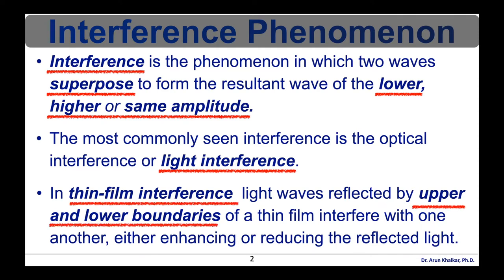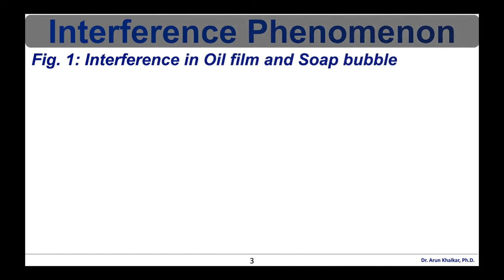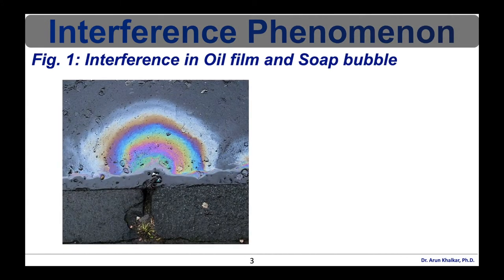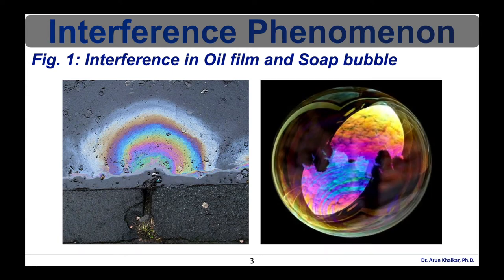In thin film interference, a natural phenomenon occurs in which light waves reflected by the upper and lower boundaries of a thin film interfere with one another, either enhancing or reducing the reflected light. The most common example is the soap bubble, which reflects multiple colors when illuminated by a light source. Thin film interference also explains the multiple colors seen in light reflected from oil films on water.